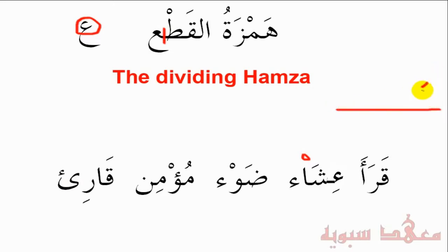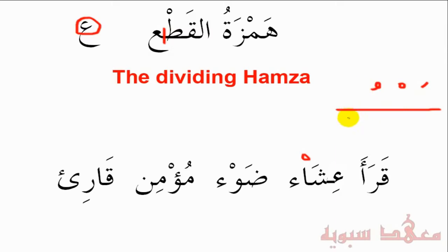To sum up: if we have a Fathah before, the Hamza gets an Alif. If we have a Sukun, the Hamza is all alone. If it has a Dhammah before, the Hamza gets a Wao. And if the letter before the Hamza is a Kasrah, then the Hamza is associated with the Ya' without the two dots, as in Qari'.